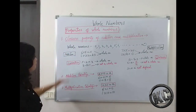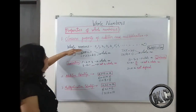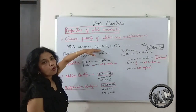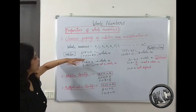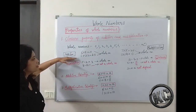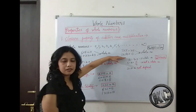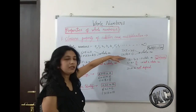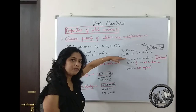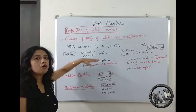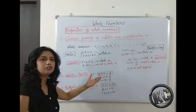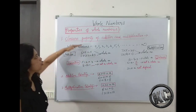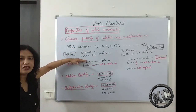Let's see — if we have a box containing all whole numbers, then the answers we get for addition and multiplication of whole numbers are also whole numbers, and they can also be placed into that box. So this is the closure property of addition and multiplication.